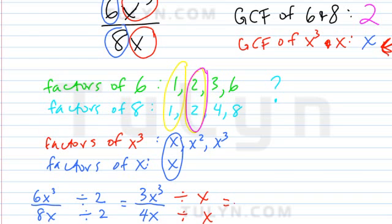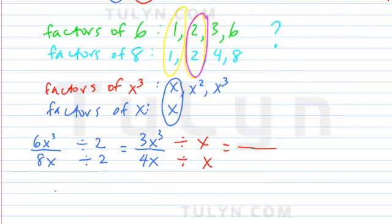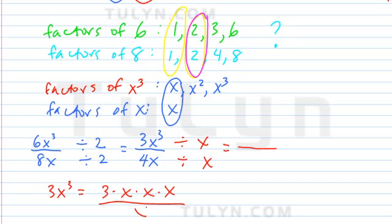Divide by x on the top and the bottom. And what do I get? What is 3x to the third power? Now look carefully. It's like this. 3x to the third power is 3 times x times x times x.